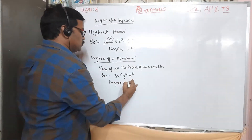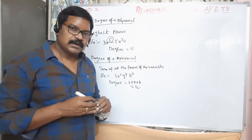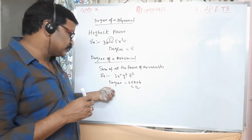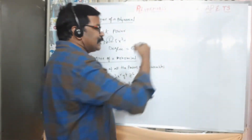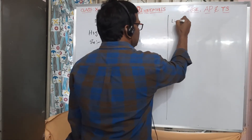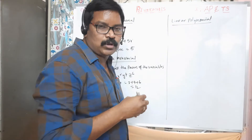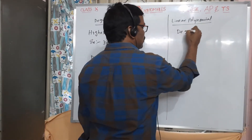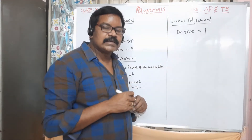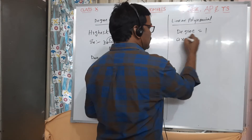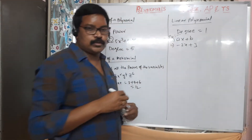There are different types of polynomials according to their degree. The first type is a linear polynomial, where the degree of the polynomial is equal to 1. Examples include ax + b or −2x + 3.